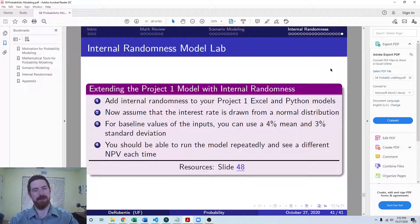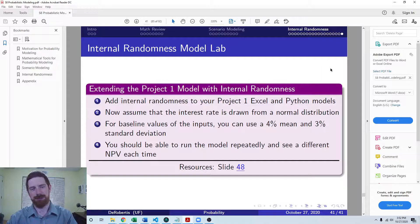Now instead of just taking the interest rate as is, we're going to have a mean and standard deviation of that interest rate as model inputs, and the model is going to draw a random interest rate from a normal distribution each time that you run the model. You should be able to run the model repeatedly and see different NPVs coming out as a result.